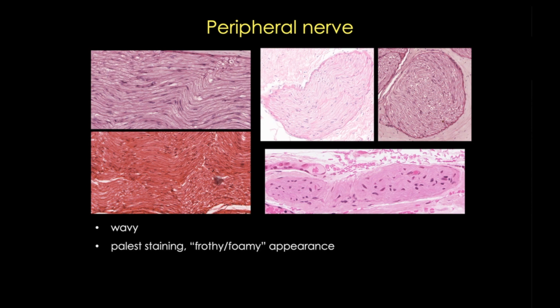When we section peripheral nerve, we see waves and sometimes even white spaces between the bundles. Peripheral nerve is almost always the palest staining of the three tissues, and it has a frothy, almost foamy appearance. This is because myelin, which is mostly fat, and axoplasm, which is mostly water, don't stain well with common stains, and also because myelin can be removed by the fixation process, leaving almost clear spaces. Peripheral nerve sections show numerous nuclei, but remember the visible nuclei mostly belong to Schwann cells. These are external nuclei — they lie alongside the associated fibers, not within them.